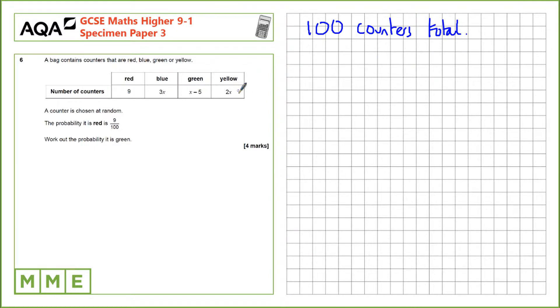We have the number of counters here. If we add all of these up we should get 100 counters. So we can do that and hopefully find x that way by creating an equation. So we have 9 plus 3x plus x minus 5 plus 2x equals 100.